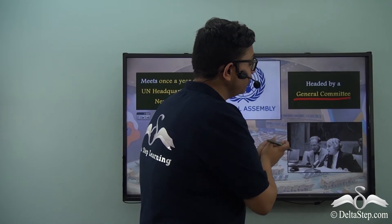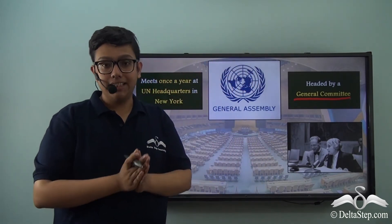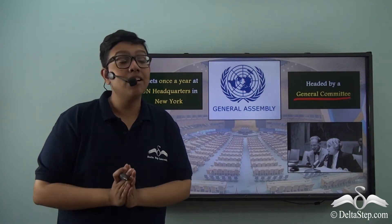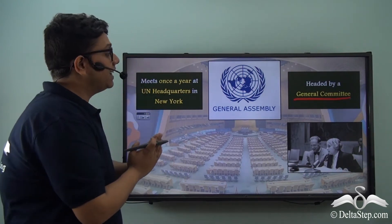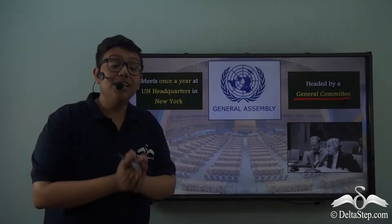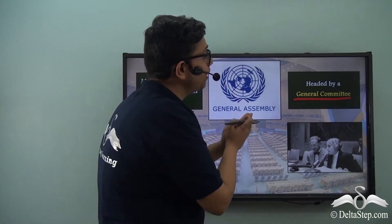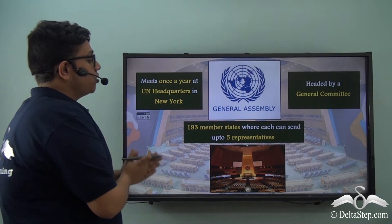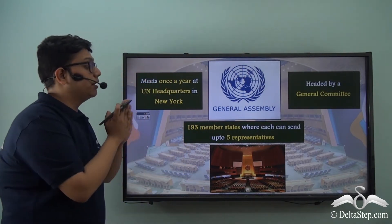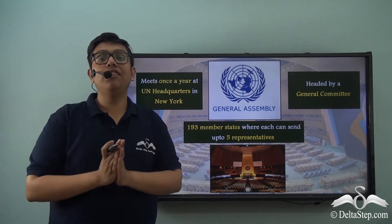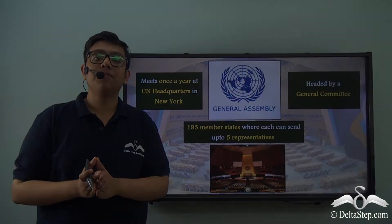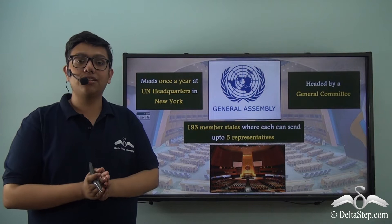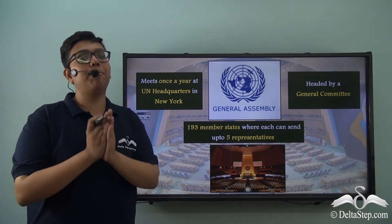Vijaya Lakshmi Pandit, an Indian diplomat, served as the 8th President of the United Nations General Assembly and was heading the General Committee for that subsequent year. As mentioned, 193 member nations are part of the United Nations General Assembly, and each of these member nations can send a permanent delegation having up to five representatives.